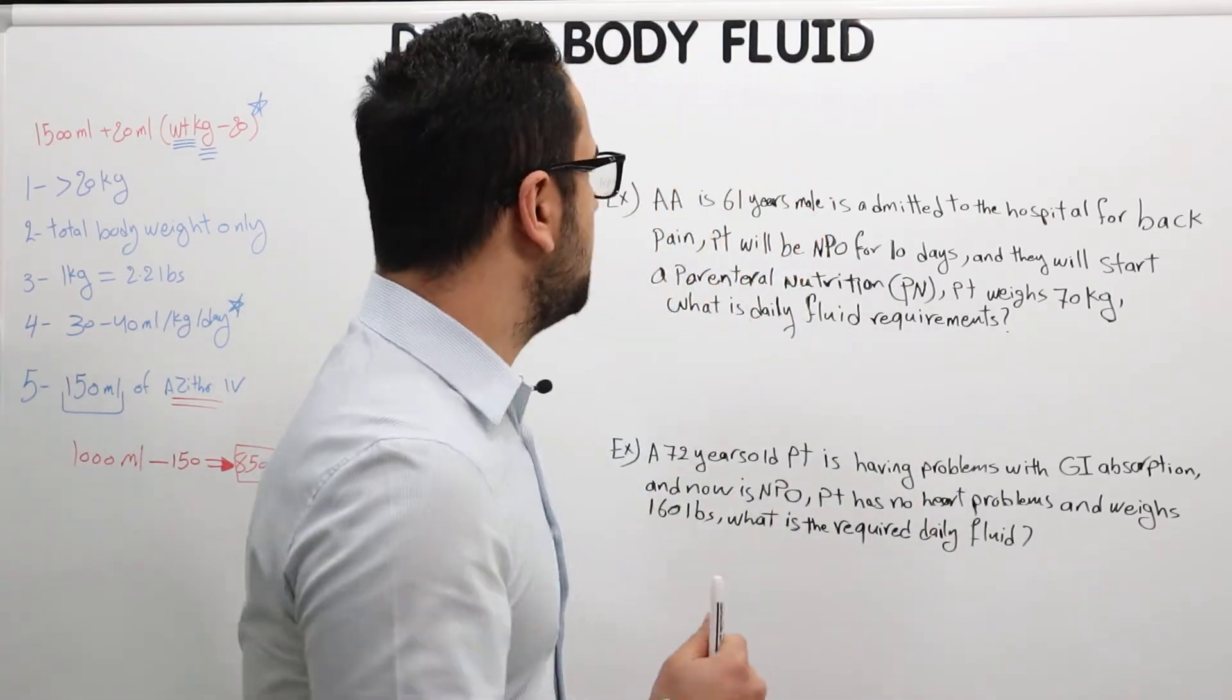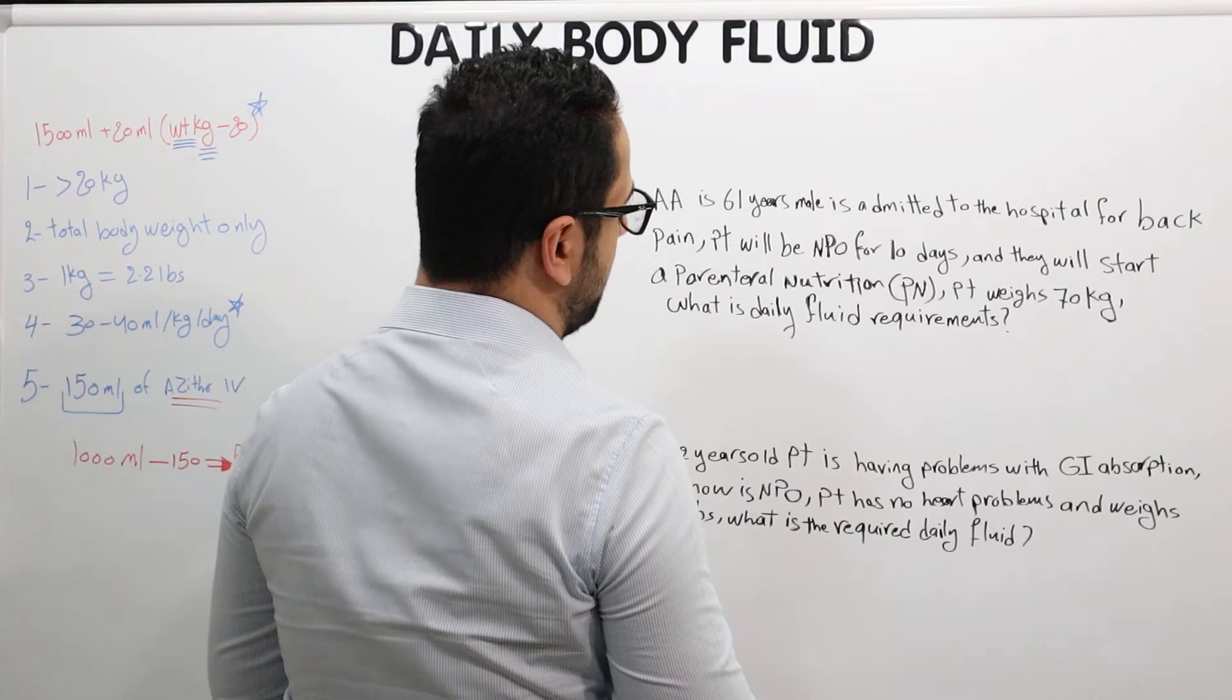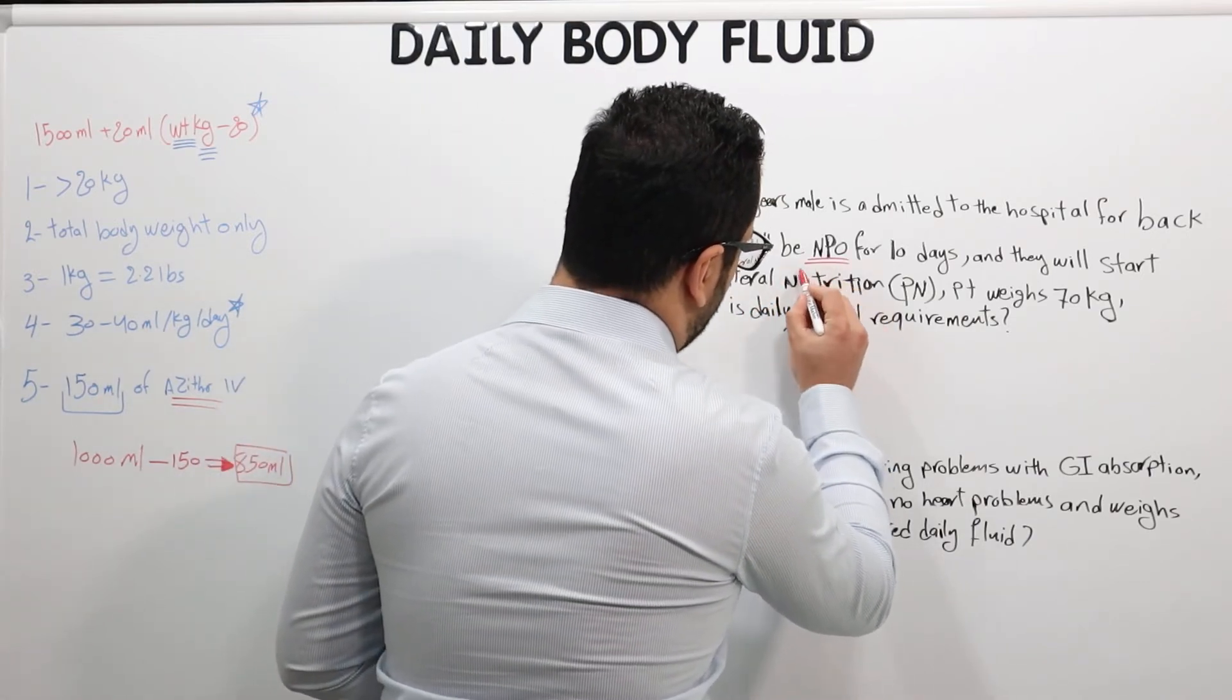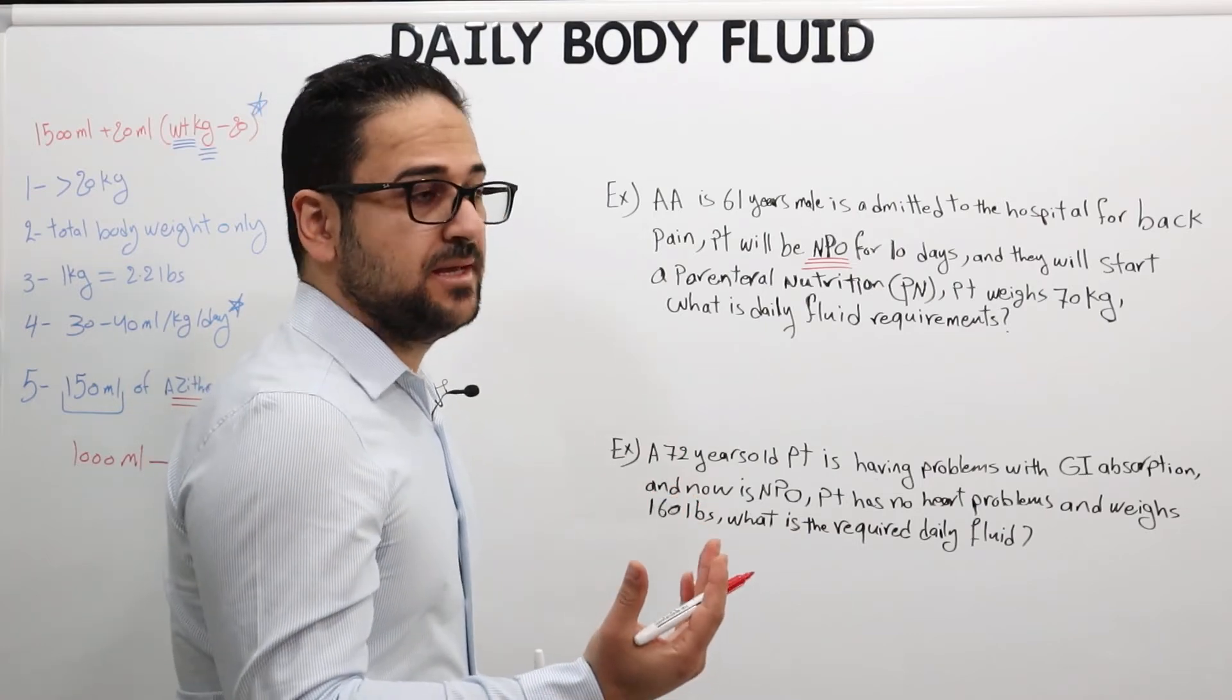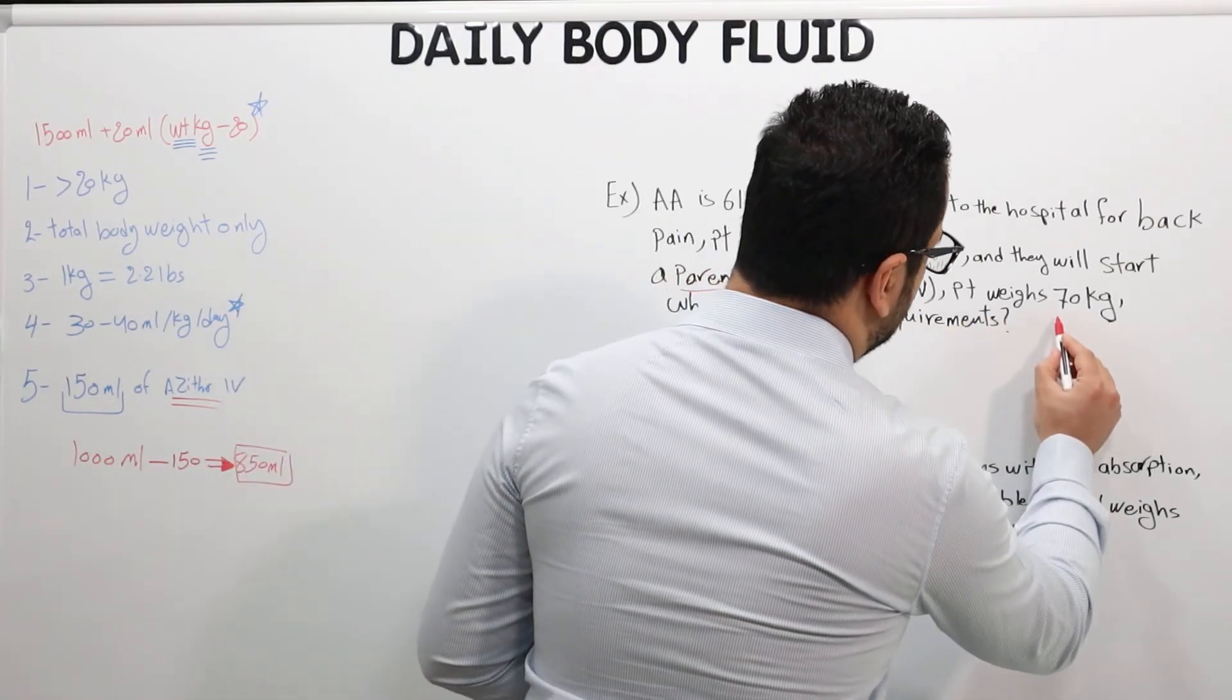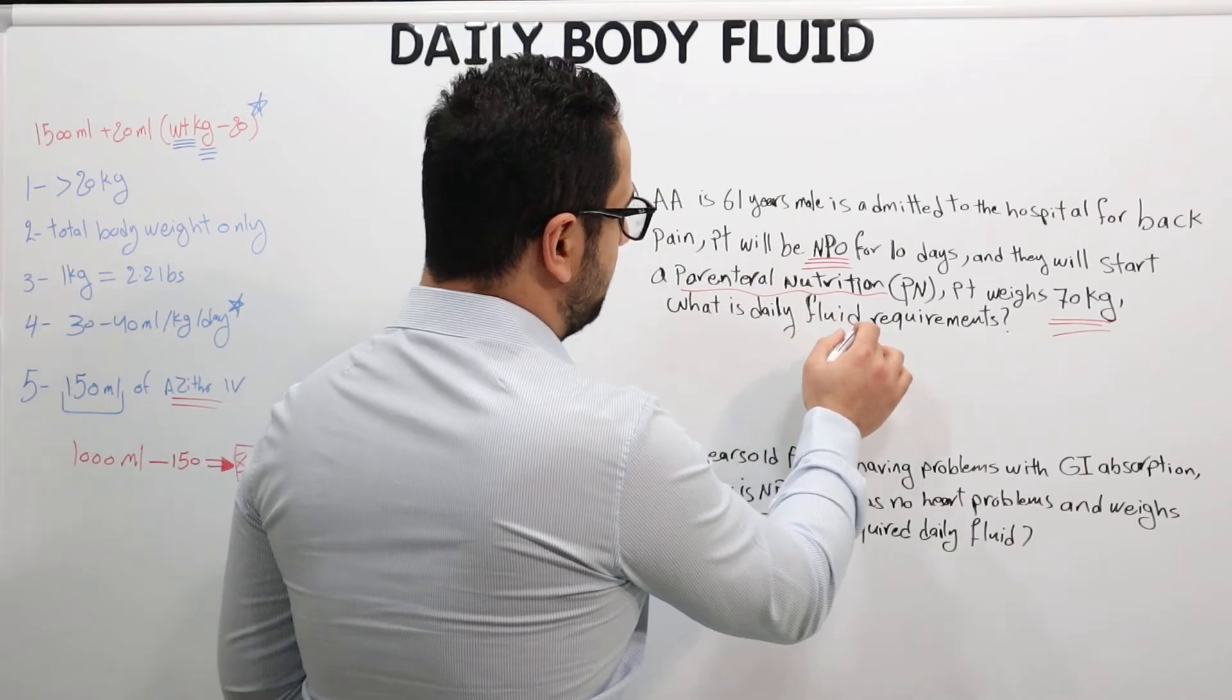Let's take this example to have a better idea how to apply this formula. Question number one says AA is a 61-year-old male who is admitted to the hospital for back pain. Patient will be NPO—very important: whenever you see NPO this means the patient can't take anything orally, so they're being given parenteral nutrition instead. Patient weighs 70 kilograms. So this is the total body weight and it's in kilograms, so we're good. What is the daily fluid requirement?